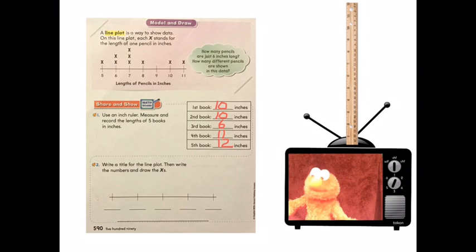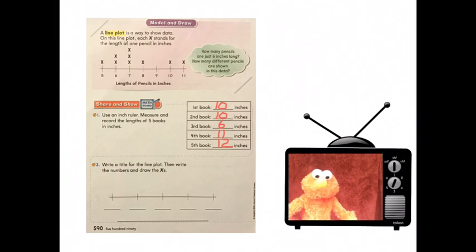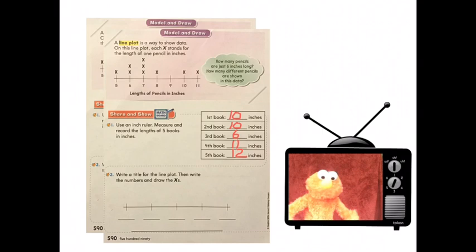Now, this is called data. And I'm going to take my data and make a line plot. So now I go to number two. Write a title for the line plot. Then write the numbers and draw the X's. Well, the title will be Elmo's books. You can make it your own title. You could write Eli's books. Or Skyla's books. Or Vivian's books. Hi, Vivian. Now we need to write down the numbers that match our data. The smallest number will start our line plot. And the largest number will end our line plot. Now for this part, Mr. Oppenheim is going to make our line plot. Take it away, Baldy!